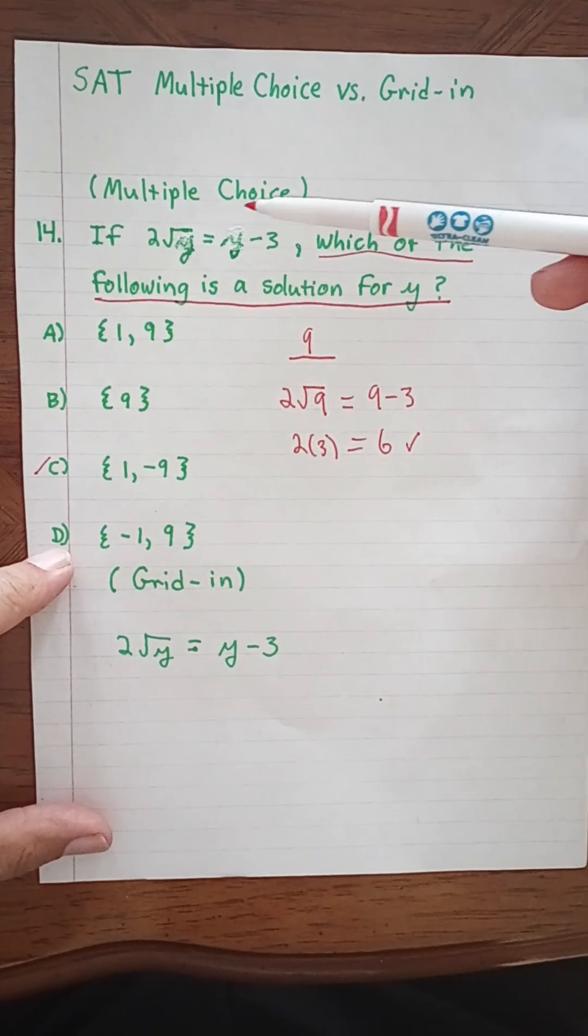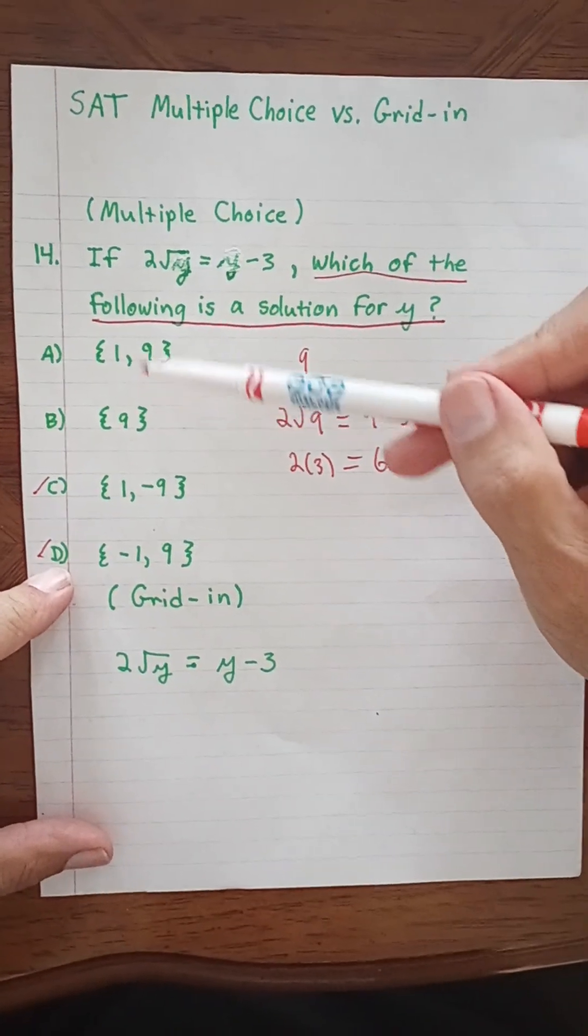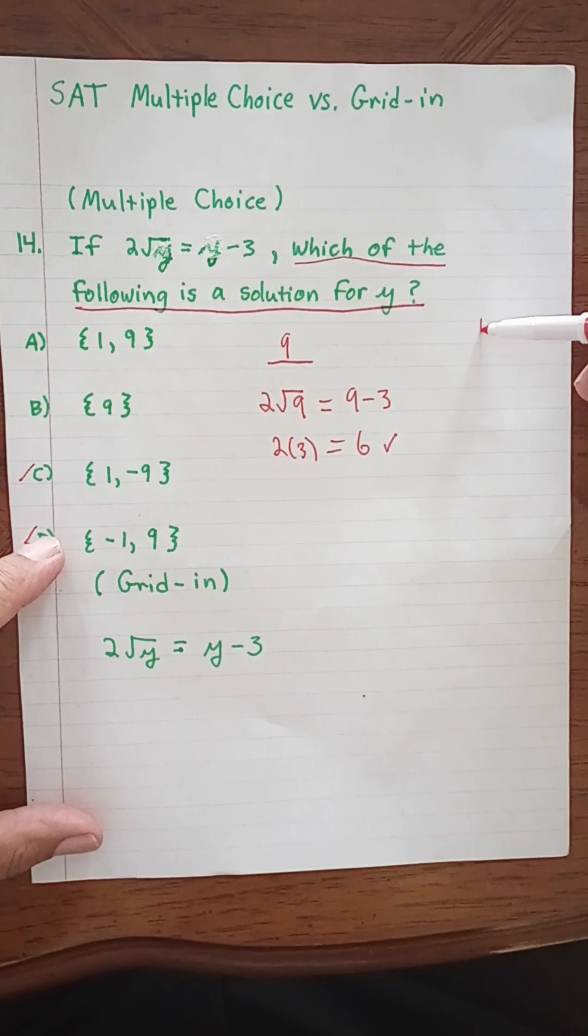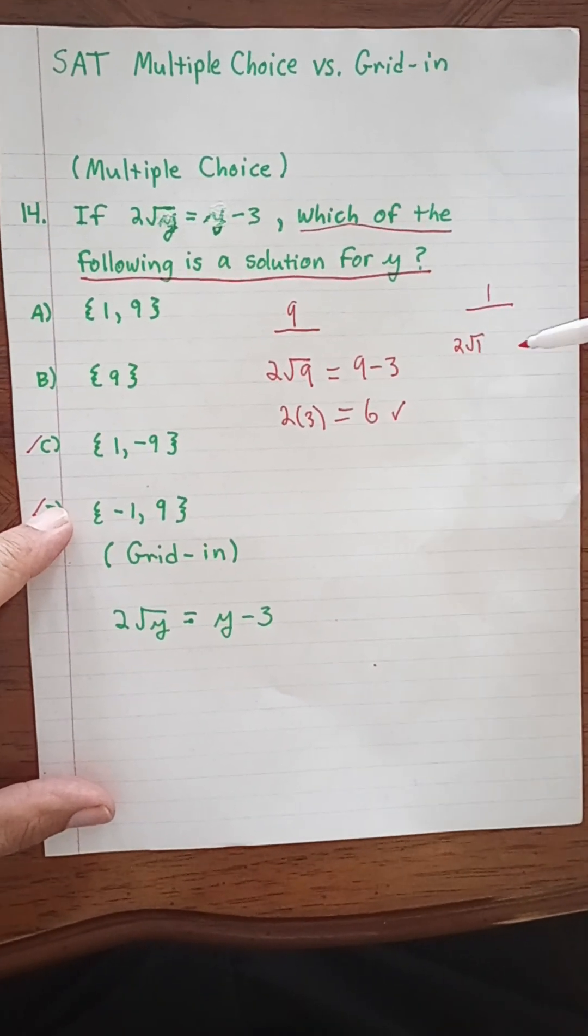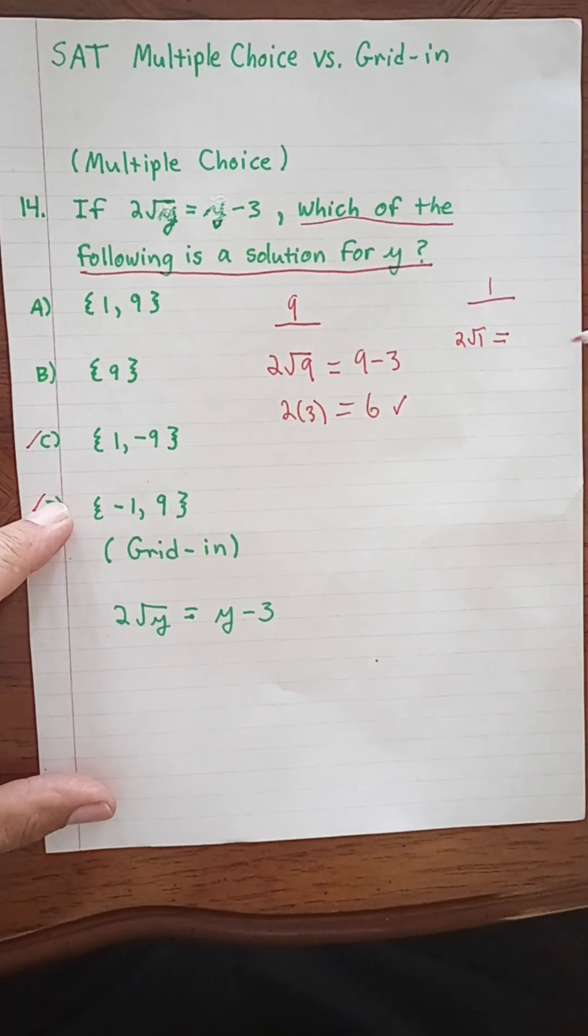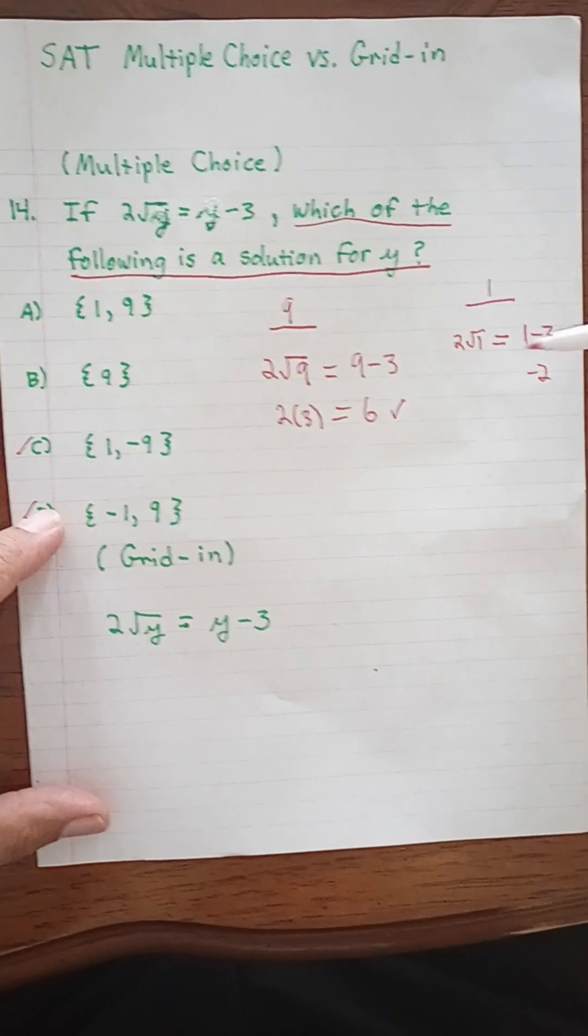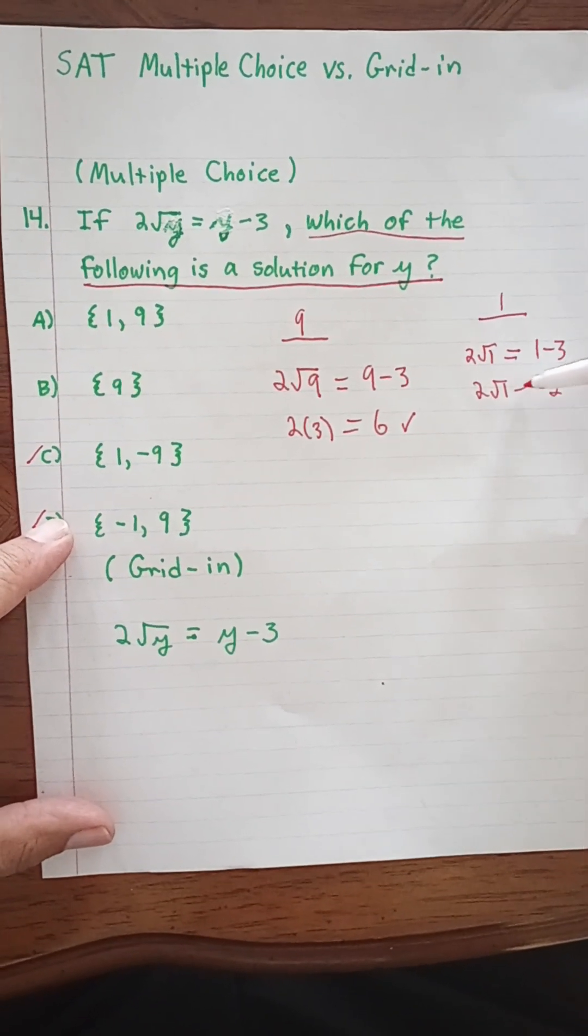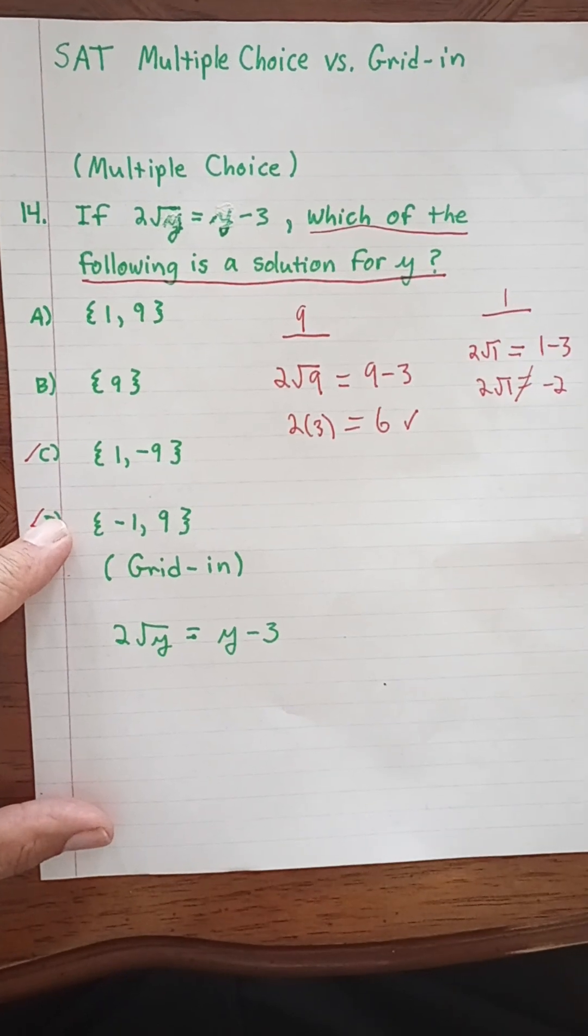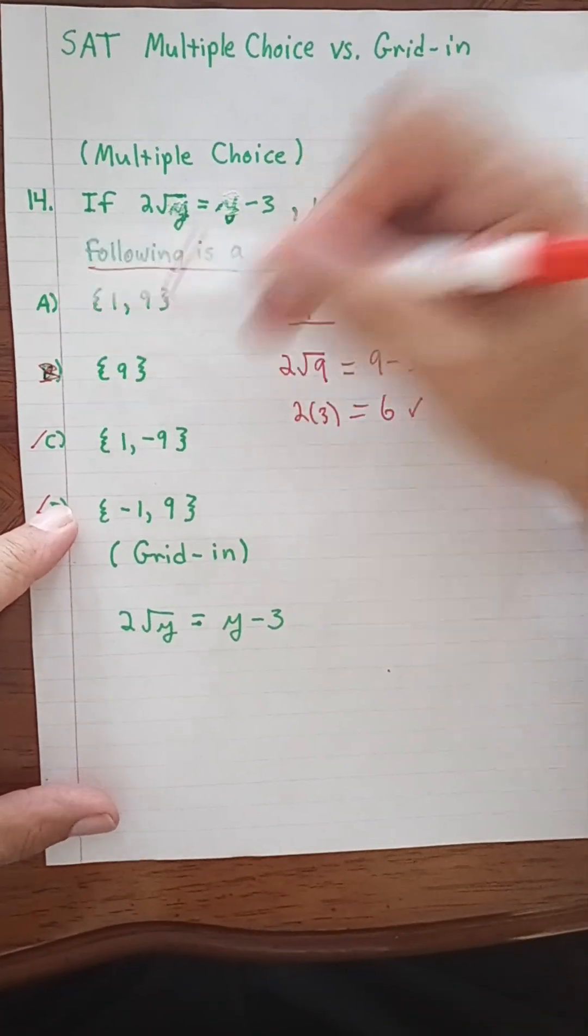We can eliminate d as well, and we just try out number 1. When we plug in 1, we've got 2 times the square root of 1 equals 1 minus 3, which is negative 2. And 2 times the square root of 1 does not equal negative 2, so that's out. Our answer is going to be b as in boy.